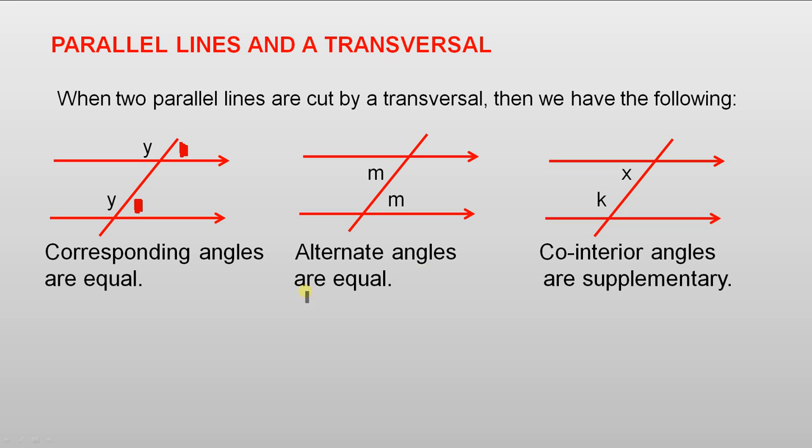Alternate angles are equal. So this angle here, M, and this one here, they are alternate angles, and they are equal. Now here we have an angle there and there. Those two angles are alternate. They are also equal.